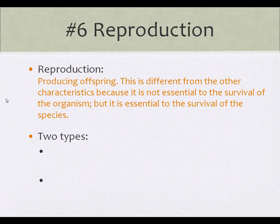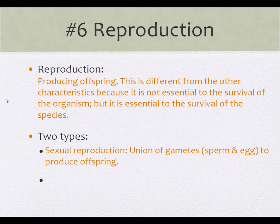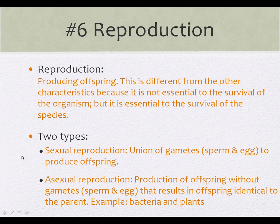There are two types of reproduction, which you should know pretty well by now. The first one is sexual reproduction, which is the union of gametes that are made during meiosis to produce offspring. The second one is asexual reproduction — this is the production of offspring without sperm and eggs, and it results in offspring that are identical to the parent. Asexual reproduction is very similar to, and kind of close to, cloning.